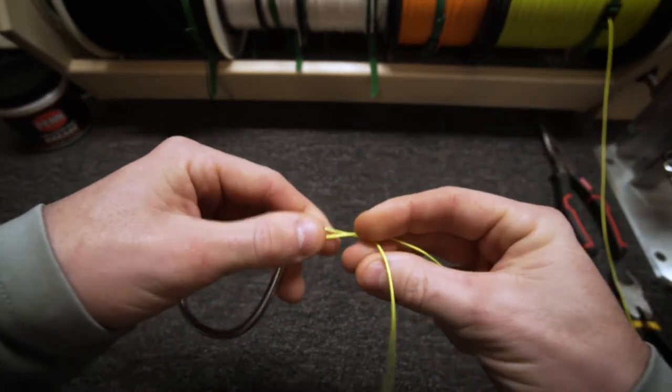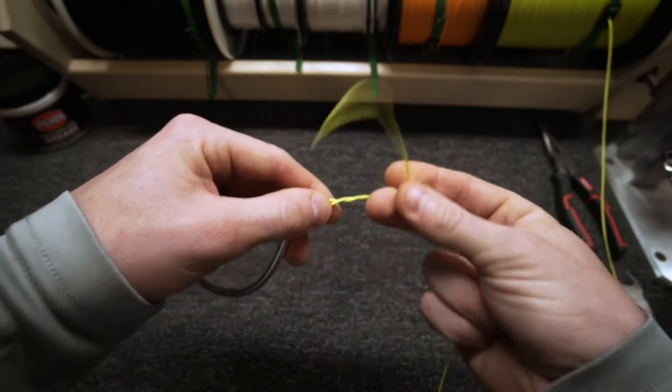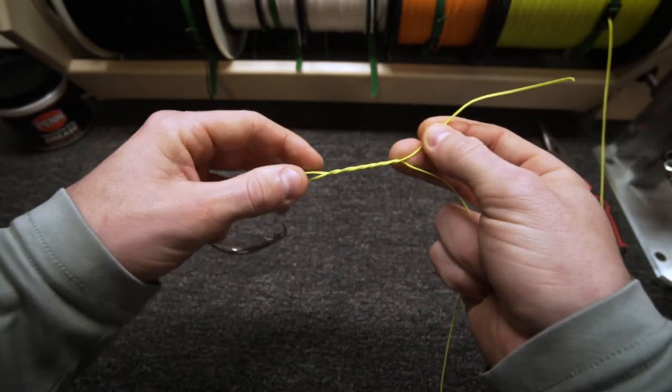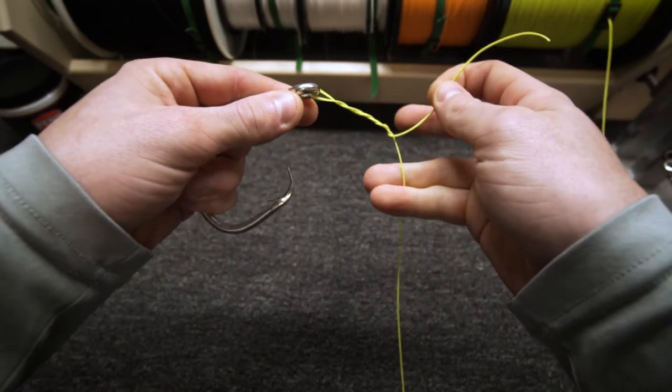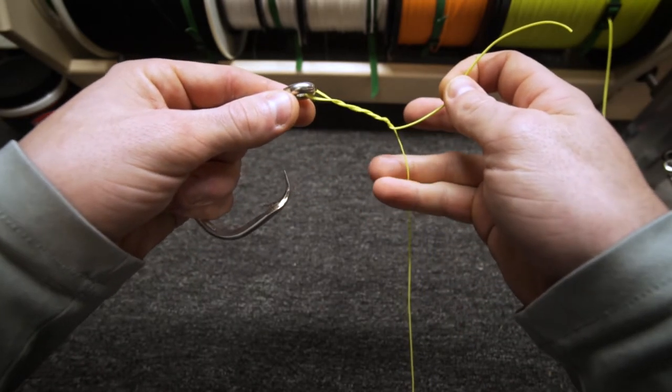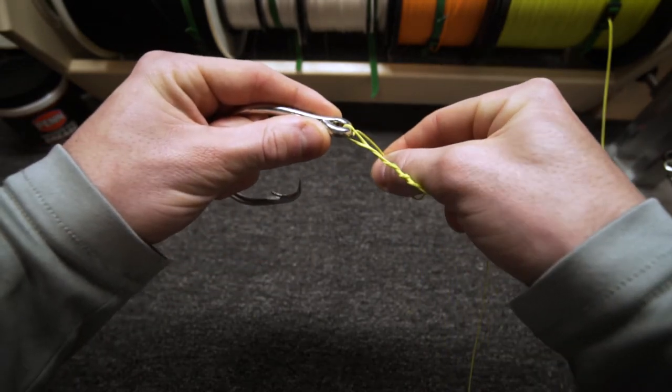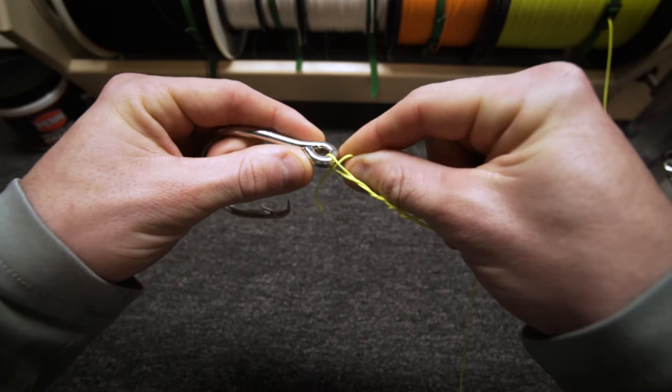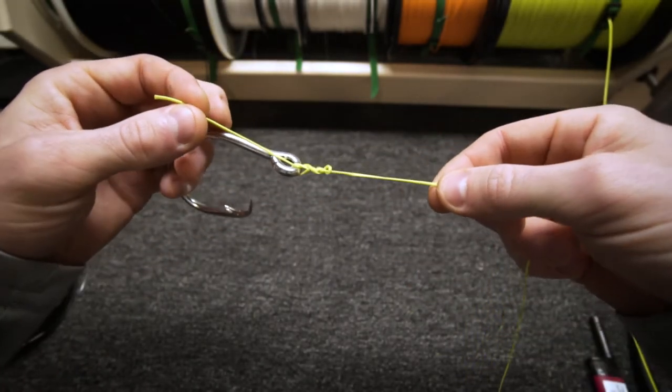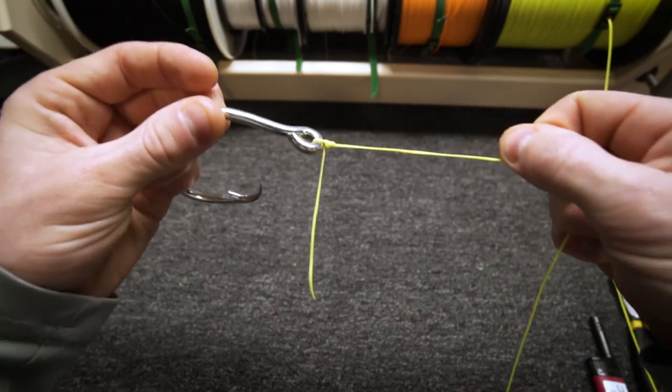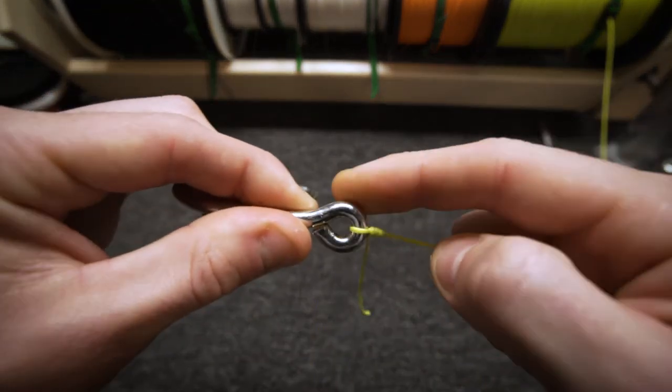I tie the tag end around the main line, on this one let's do four or five wraps. From there to do the clinch knot, I grab my main line with my pinky and my ring finger. You're going to take your tag and go back through this loop and pull this tight. That is the clinch knot and it just clinches on itself, makes this nice little set of barrels.